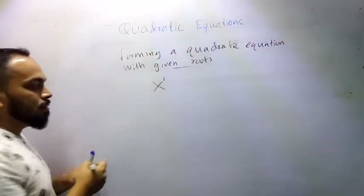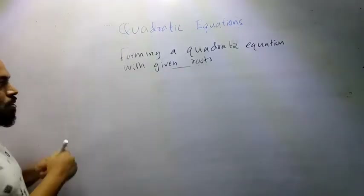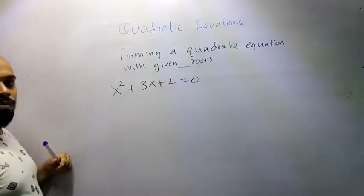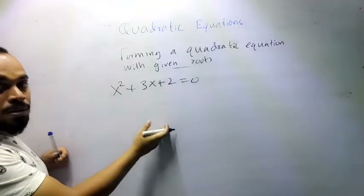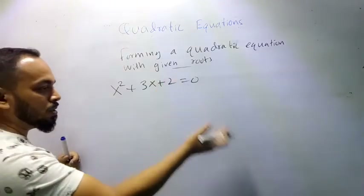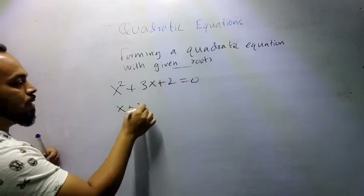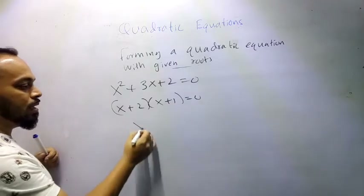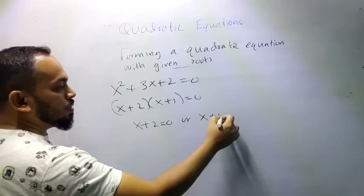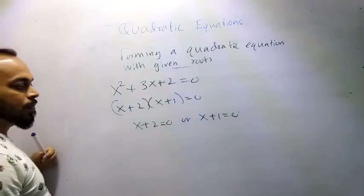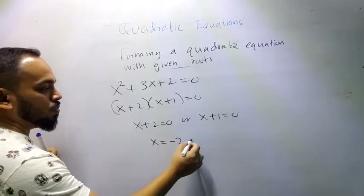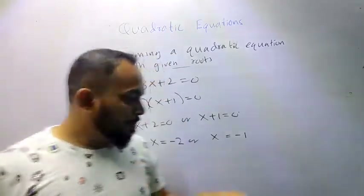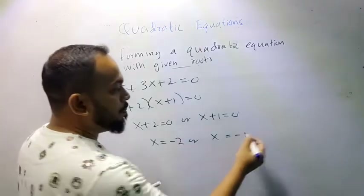Simple example: x² + 3x + 2 = 0. How did we solve this? We were able to factorize it: (x + 2)(x + 1) = 0, giving x + 2 = 0 or x + 1 = 0, which means x = −2 or x = −1. Now we can go from the solutions back to the equation — we can reverse this method.